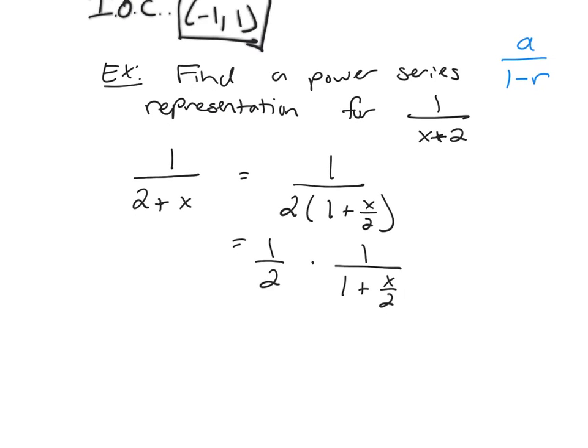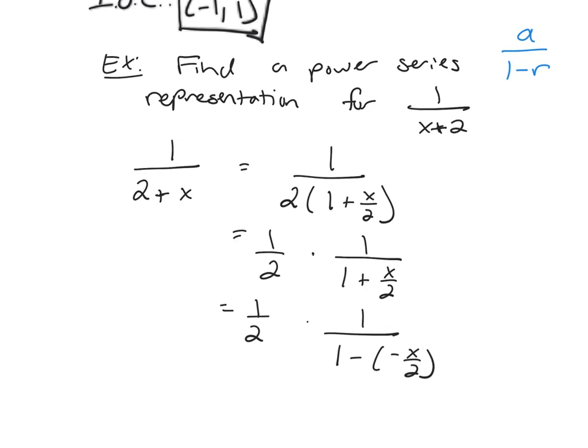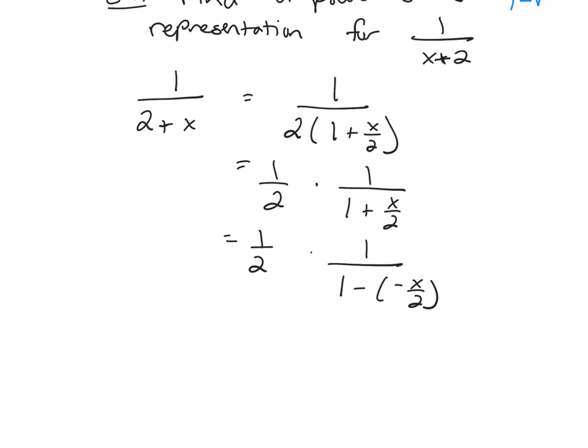Change it into a minus and insert in a negative. So this is 1 half, 1 over 1 minus negative x over 2. And now we can use our formula here for this part on the left. Write down the power series for that.